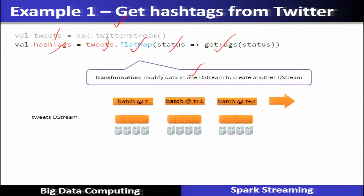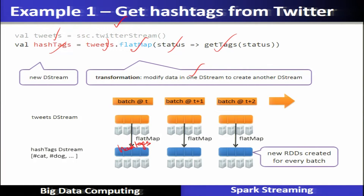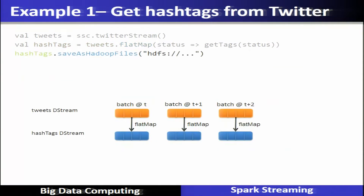The transformation will modify one DStream to create another DStream. From the tweet DStream, when a flatMap is applied, it extracts hashtags to produce a hashtag DStream — for example, #cat, #dog, and so on — generating new RDDs out of every batch.